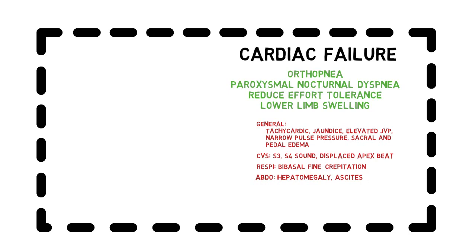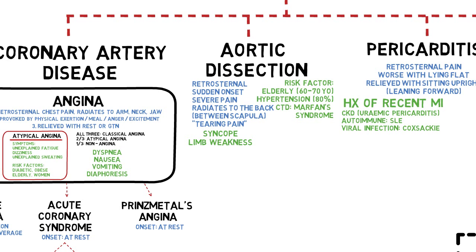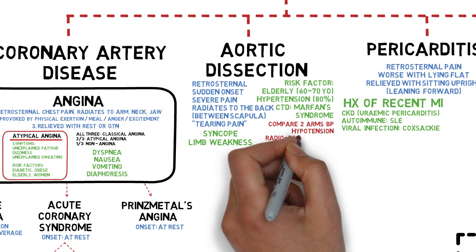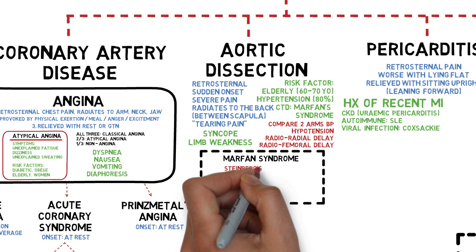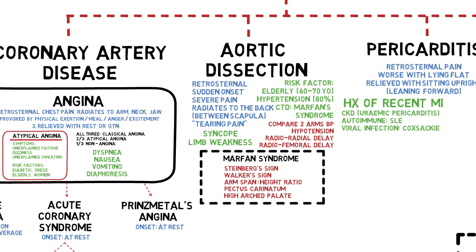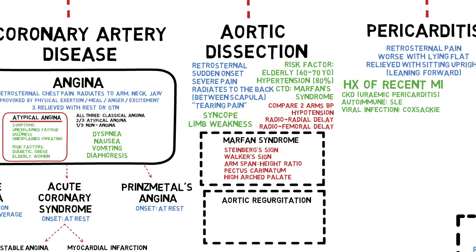In aortic dissection, if the dissection occurs before the aorta branches into the left subclavian artery, the patient may show different blood pressure in the right and left arms. The compressed vessel will show hypotension. Comparing the two radial pulses will show radio-radial delay, but if the dissection occurs after the left subclavian artery, we will have radio-femoral delay instead. In young patients, we may also look for features of Marfan syndrome such as the Steinberg sign, Walker sign, long arm span to height ratio, pectus carinatum, or high arched palate. Aortic dissection near the root of the aorta may also cause aortic valve regurgitation, presenting with an early diastolic murmur at the second left intercostal space and a collapsing pulse.